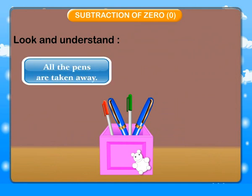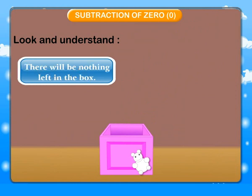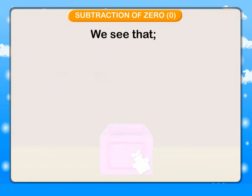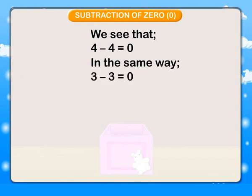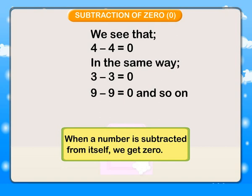There are four pens in the box. All the pens are taken away. There will be nothing left in the box. We see that 4 minus 4 is equal to 0. In the same way, 3 minus 3 is equal to 0; 9 minus 9 is equal to 0, and so on. When a number is subtracted from itself, we get 0.